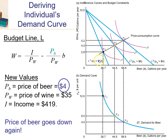As you drop beer prices from 12 to 6 to 4, the budget constraint gets flatter and flatter. The optimal bundles are seen by the tangencies of the indifference curves I1, I2, and I3 with these budget constraints in blue. These optimal bundles are at E1, E2, and E3.